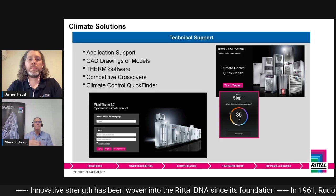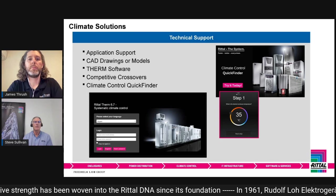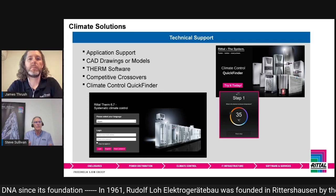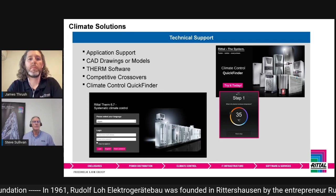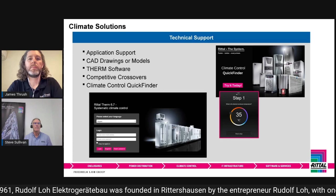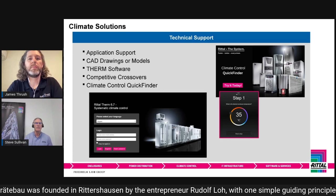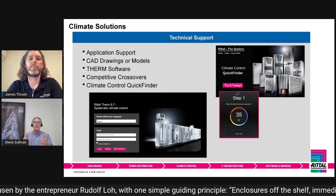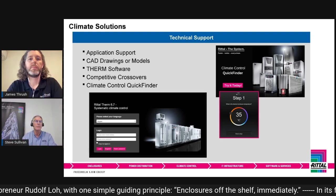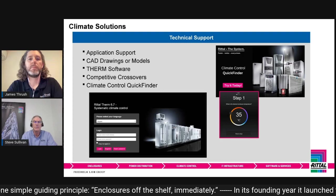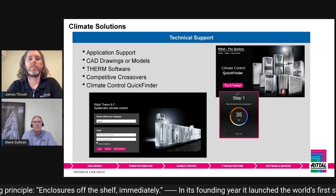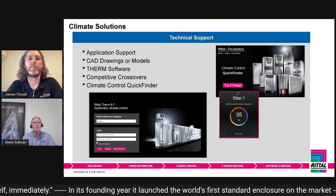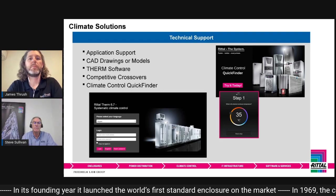So it gives you multiple alternatives. Therm can be used for anything that's out there, but it's going to return a Rittal product for you. And then there's also something new — the Climate Control Quick Finder. Within three simple questions, it points you right in the right direction of the product choice, whether it's a fan, air conditioner, air-to-water heat exchanger, heater, or whatever you need. Three simple questions just kind of gets you in the right area. Lots of good tools online and free.